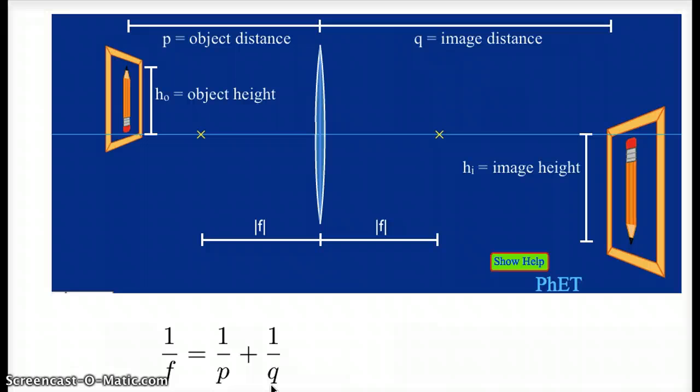But we will see in the future some situations where one or more of these numbers might be negative. But in the diagram we're looking at, they would all come out to be positive numbers. So that is one equation that can help us figure out where the image will form, given the object distance and the focal length.